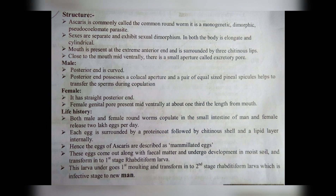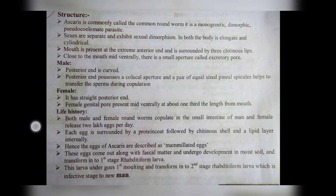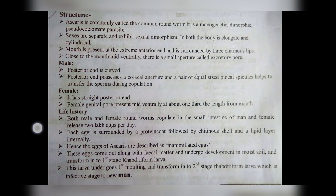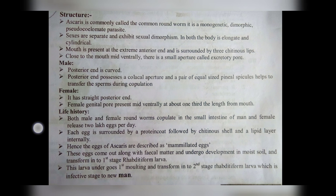Now let us discuss the life history, that is the life cycle of Ascaris lumbricoides. Both male and female roundworms copulate in the small intestine and the female releases 2 lakh eggs per day. Each egg is surrounded by a protein coat, followed by a chitinous shell and a lipid layer internally. Hence the eggs of Ascaris are described as mammillated eggs.